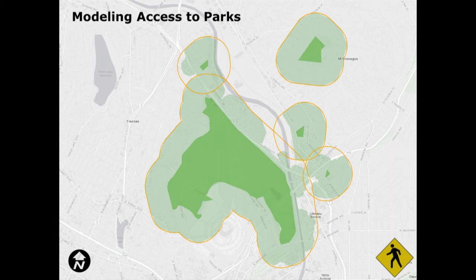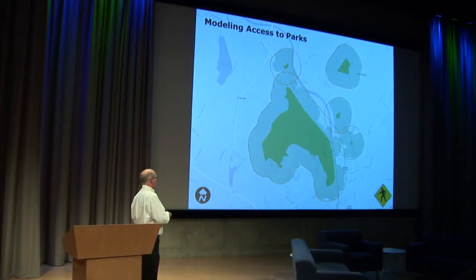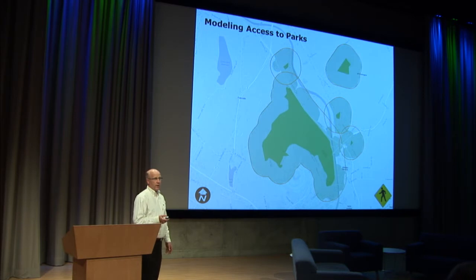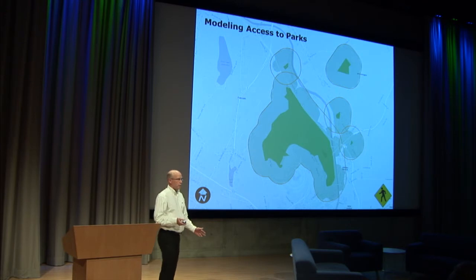Using the surface rather than a network allowed us to think about the way people actually move. Most people cut across streets where there's no crosswalk, cross parkland, open space, and parking lots. In this case we did not constrain people to streets except where there were real barriers like flood control channels, bridges, rail, and freeways — things they really couldn't get across.